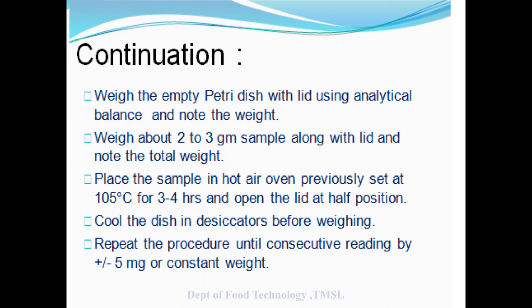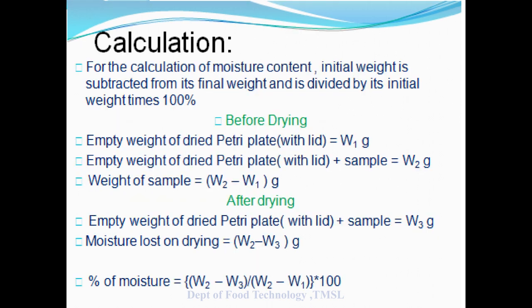Suppose the weight of the petri plate with lid after drying is W₃ gram. We can very clearly understand from the table that W₁ is the weight of the empty petri plate and W₂ is the petri plate plus sample. So W₂ minus W₁ gives the weight of the sample. After drying, the weight of the petri plate with sample is W₃ gram. So how much water is lost? Water lost is W₂ minus W₃ gram.